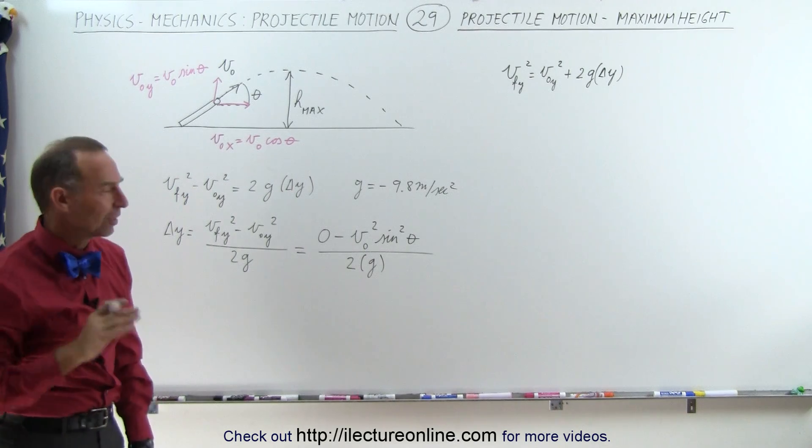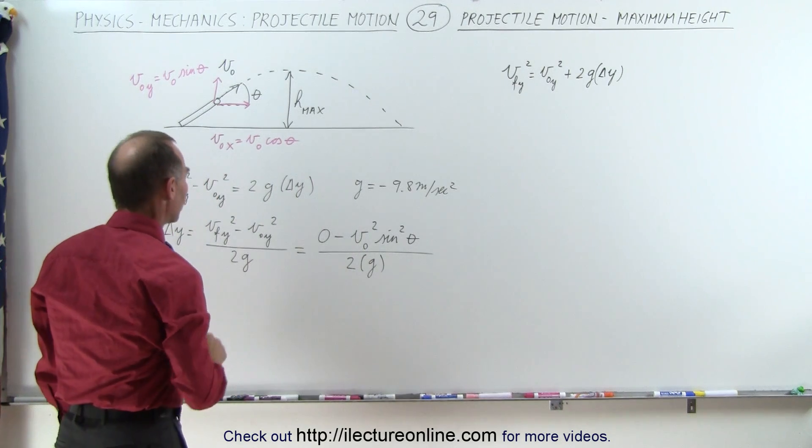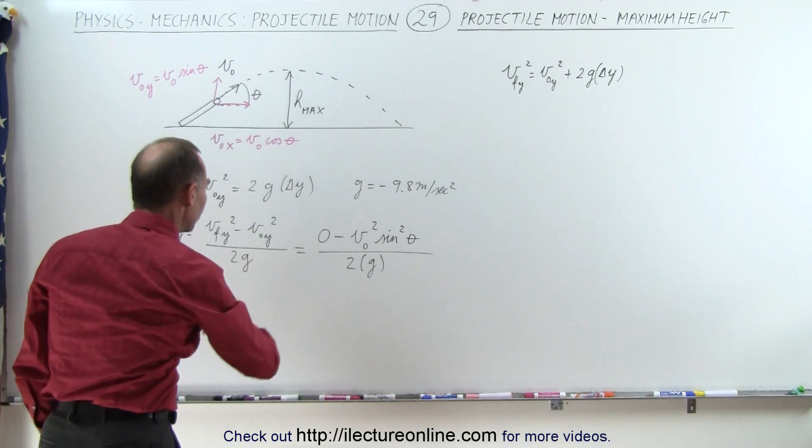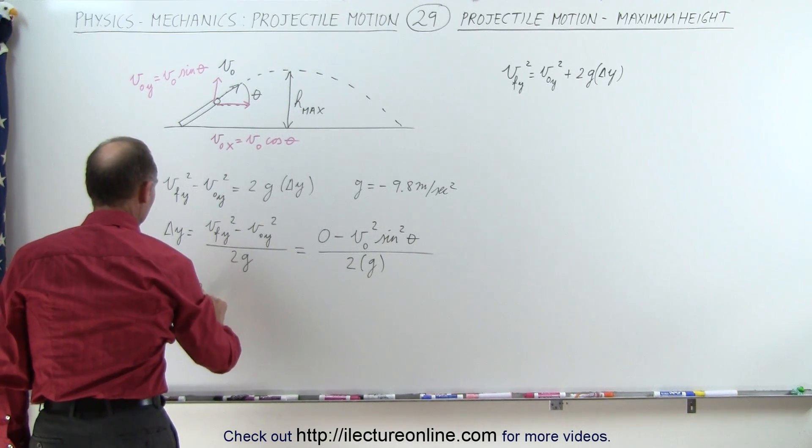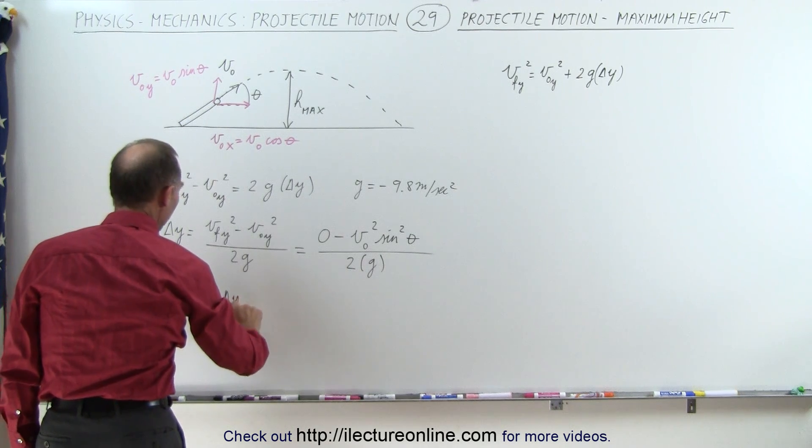Remember, g is a minus 9.8. So, when we then solve this, or simplify this, we can say that the maximum height, maximum height, which is equal to the change in y, is going to be equal to...